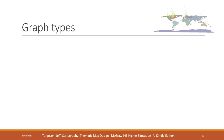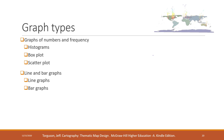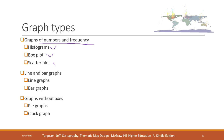There are different types of graphs. Some graphs show numbers and frequencies, like histograms, box plots, and scatter plots. We also have line and bar graphs. And there are graphs without axes, like pie graphs and cloud graphs. We can also create three-dimensional graphs.